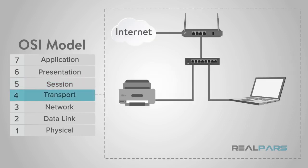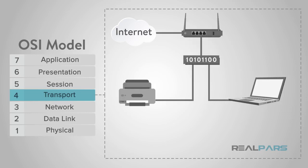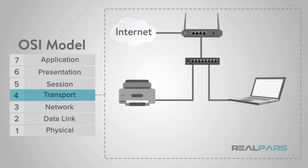The transport layer, or layer 4, is responsible for the transmission of data across network connections. This layer coordinates how much data to send, how fast, where it goes, and these sorts of things.